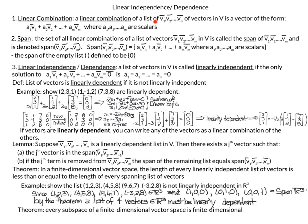A linear combination of a set of vectors in a vector space V is a vector of the form: scalar a1 times the first vector v1, plus a2 times v2, up to scalar am times vector vm. The span is the set of all linear combinations of a set of vectors in a vector space. We denote that with 'span' followed by listing our vectors: span(v1, v2, ..., vn) equals a1·v1 + a2·v2 + ... + am·vm.